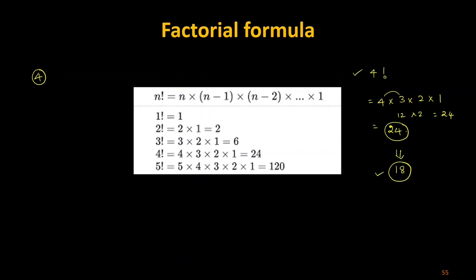I can start with 4, multiply by 3 (which is 4 minus 1), then multiply by 2 (which is 4 minus 2), and so on. Alternatively, I can make a register — say AX — start at 0001, then put the value into BX so BX equals AX, and increment BX.